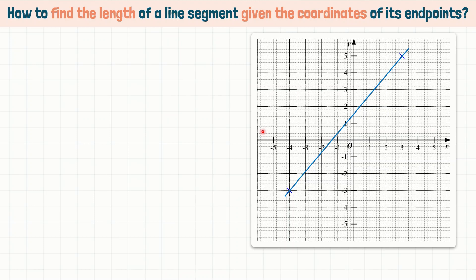In this case, we are given the information regarding the coordinates of the endpoints. The coordinates of this particular endpoint are 3, 5, and the coordinates of this particular endpoint are negative 4, negative 3. I have decided to call this point A and this point B.